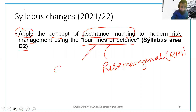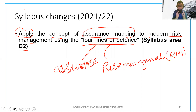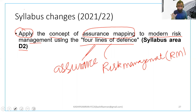We need to see assurance mapping around the four lines of defense and understand how four lines of defense is now part of your modern risk management system. Whether the examiner uses the terminology 'risk management,' 'assurance mapping,' or 'four lines of defense,' you need to know this is the model to apply.